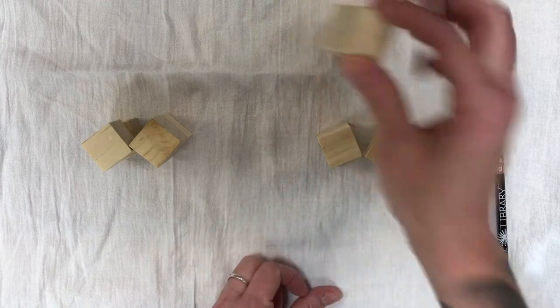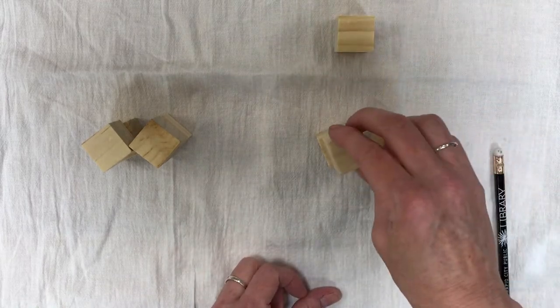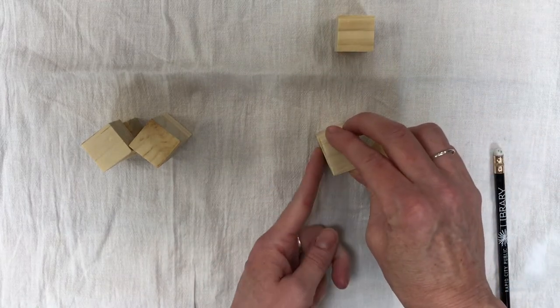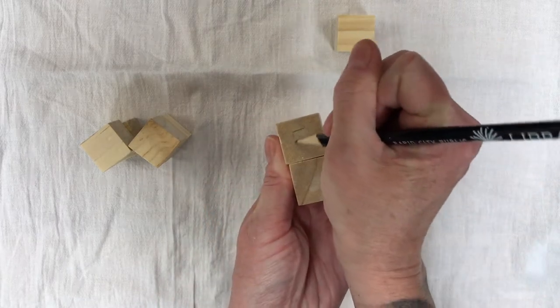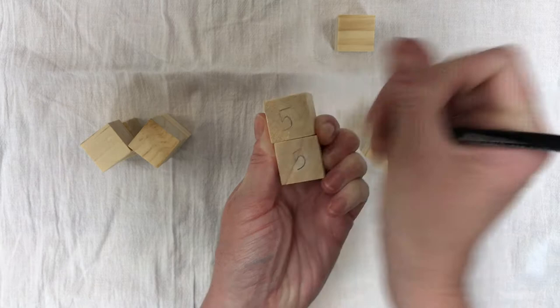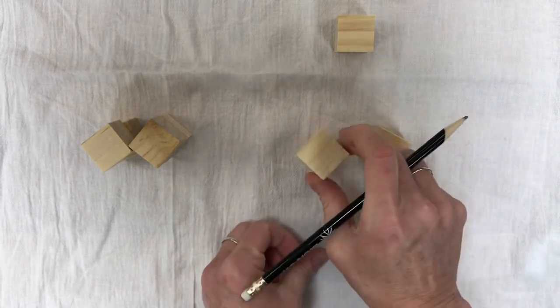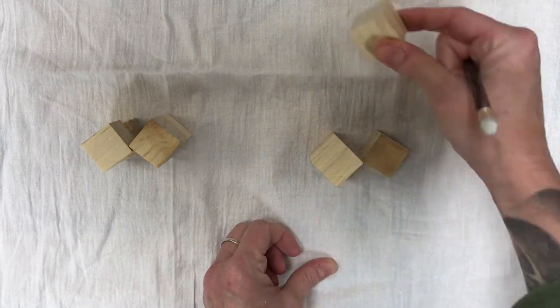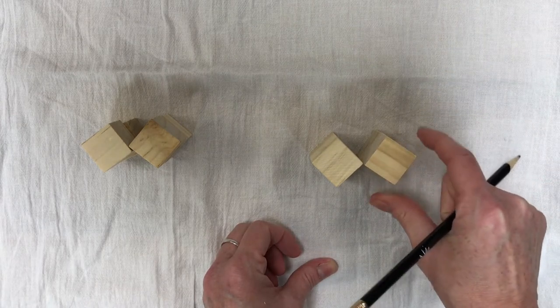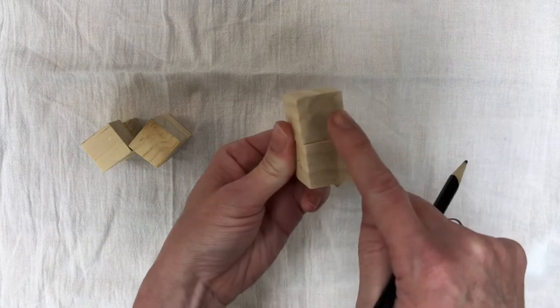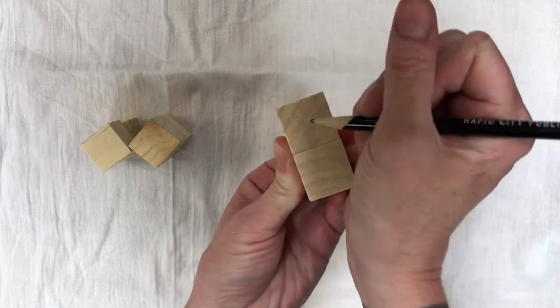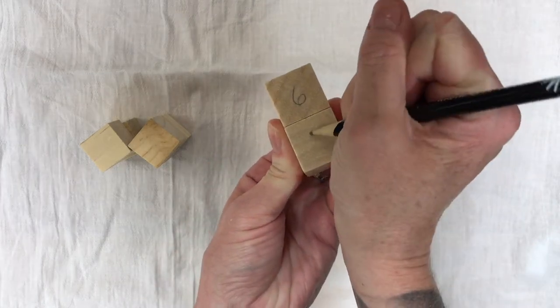So we've got our fours and grab the third block, set it on top of the left-hand four, and on the faces around the corner we are gonna write five. Then grab that last block, we're gonna set it on top, and around the corner from that four we're gonna write six. So six and six.